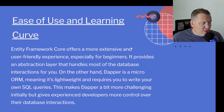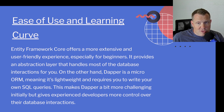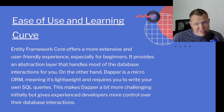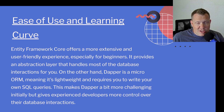Right off the bat, Entity Framework Core offers a more extensive and user-friendly experience, especially for beginners. It provides an abstraction layer that handles most of the database interactions for you. On the other hand, Dapper is a micro-ORM, meaning it's lightweight and requires you to write your own SQL queries, which I kind of prefer. This makes Dapper a bit more challenging initially but gives experienced developers more control over their data interactions.